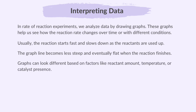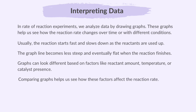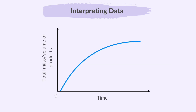Graphs can look different based on factors like reactant amount, temperature, or catalyst presence. Comparing graphs helps us see how these factors affect the reaction rate. The steepness of the curve in a reaction graph shows how fast the reaction is. Initially, when there's a lot of reactant, the curve is steep, but it gets less steep as the reactant is used up, showing that the reaction rate decreases. When there's no more reactant left, the reaction stops and the curve becomes flat.